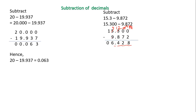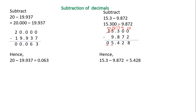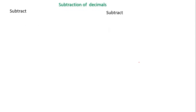Decimal point below the decimal point. Four is smaller than nine, so I borrow one from the one — the one becomes zero and the four becomes fourteen. Fourteen minus nine is five. Zero in the tens place, so I write zero. The final answer is 5.428.